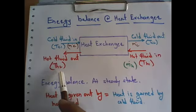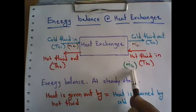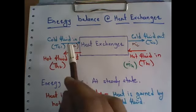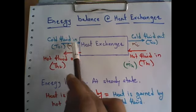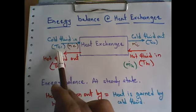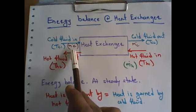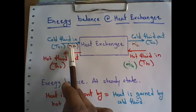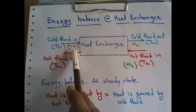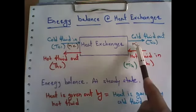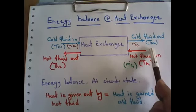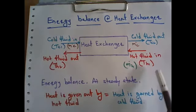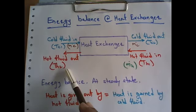The temperature is changing and enthalpy is changing, but mass flow remains the same. On the cold fluid side, the inlet temperature is Tc1 and the mass flow rate is ṁc, where c stands for cold, 1 stands for inlet, and 2 stands for outlet. For the cold fluid outlet, Tc2 is the temperature and ṁc is the mass flow rate.